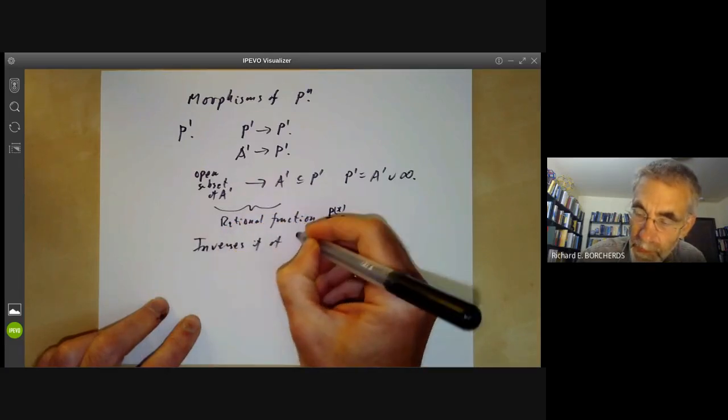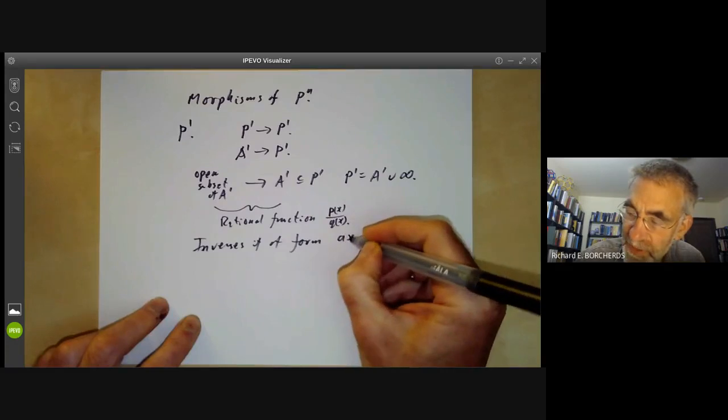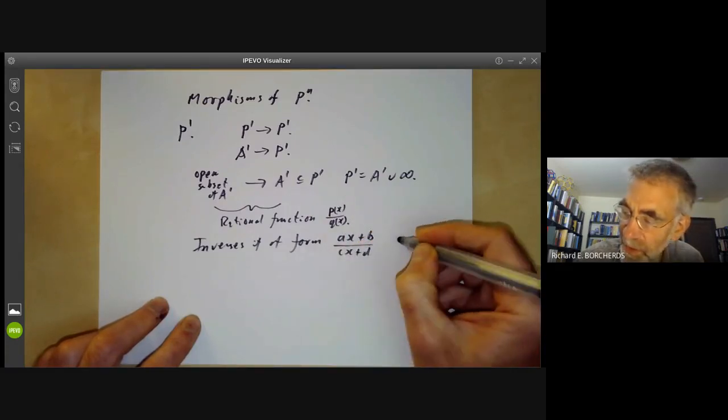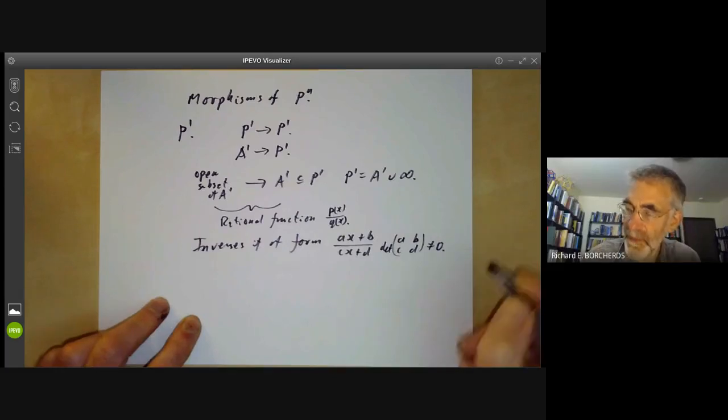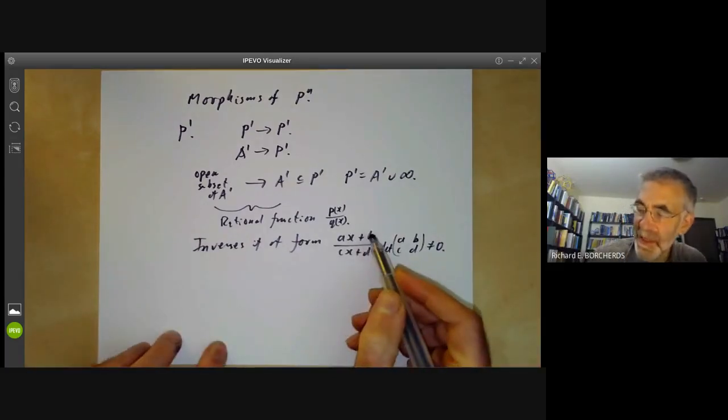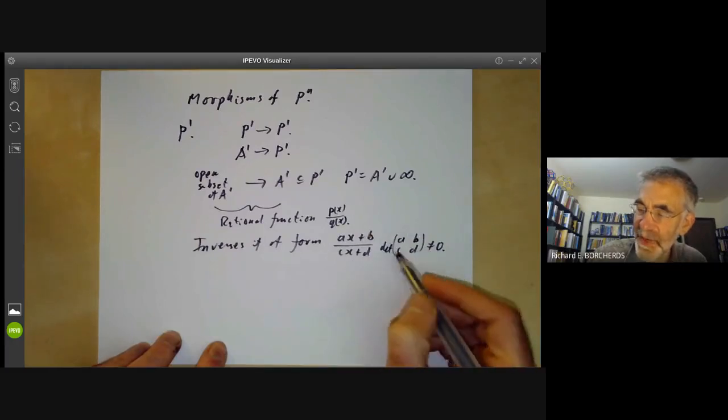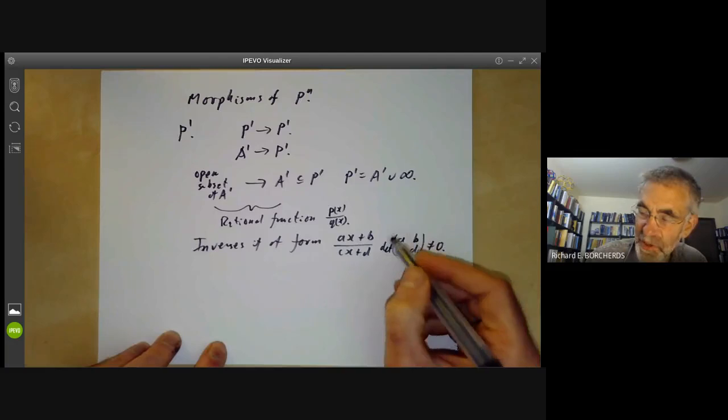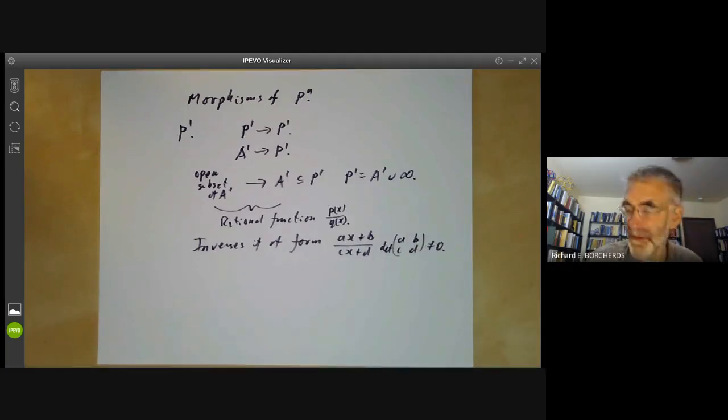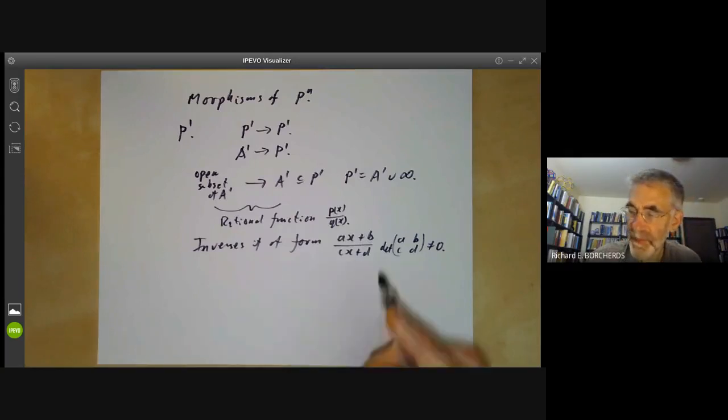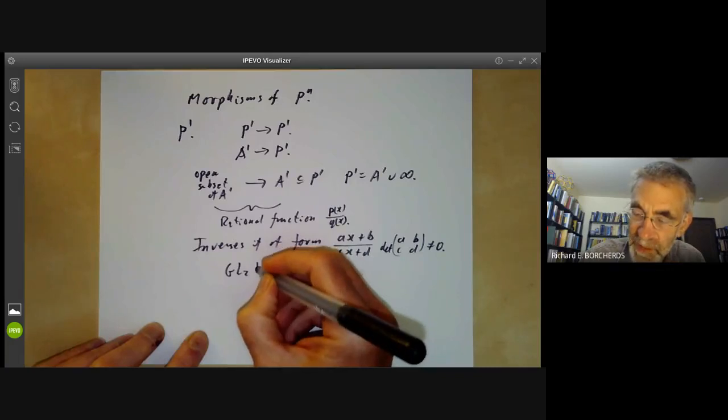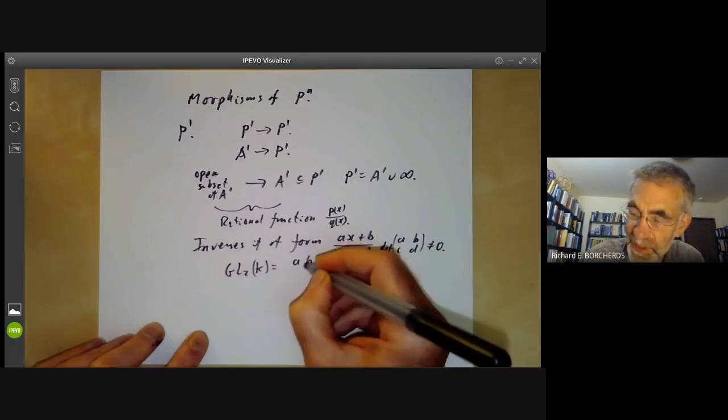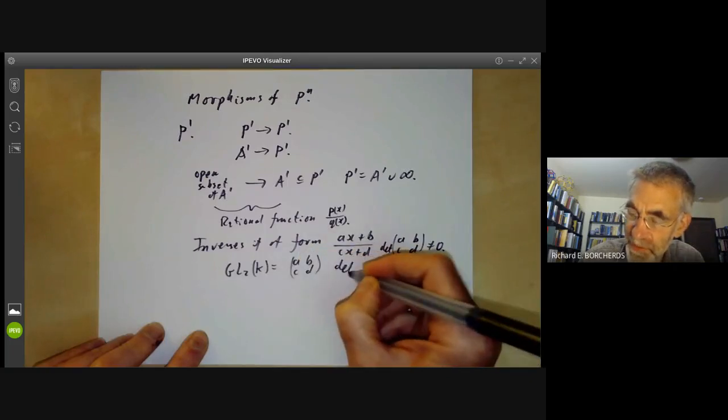Now we want to figure out which of these have inverses, and this isn't too difficult. They have inverses if they're of the form (ax + b)/(cx + d) where a,b,c,d has a determinant that's non-zero. In fact, if you represent this rational map by a two-by-two matrix, you can see that composition of rational maps actually corresponds to multiplication of matrices by a fairly easy calculation.